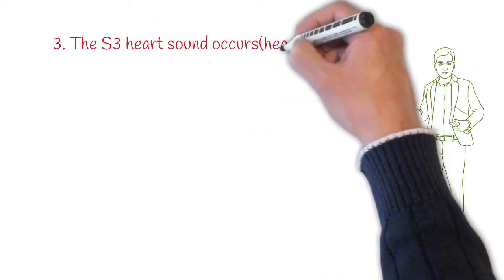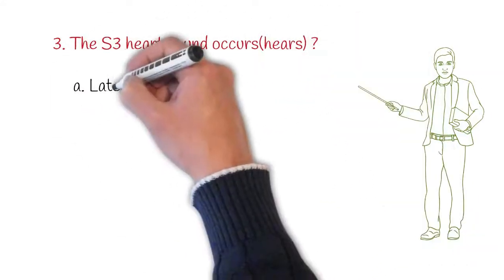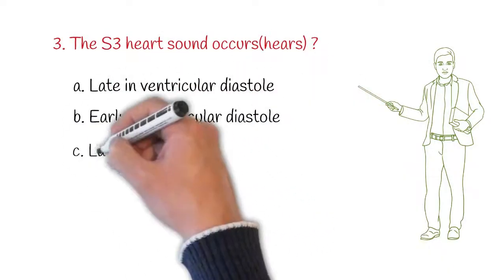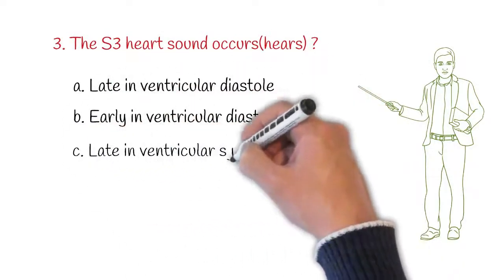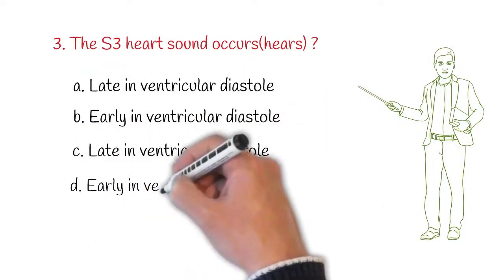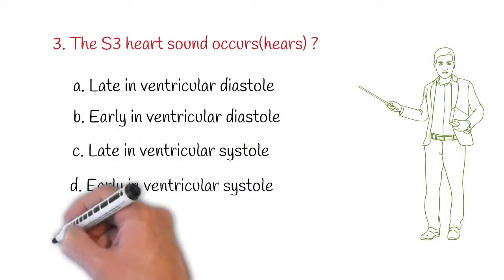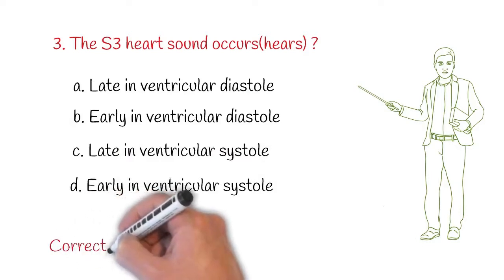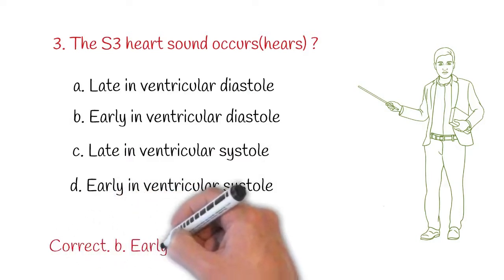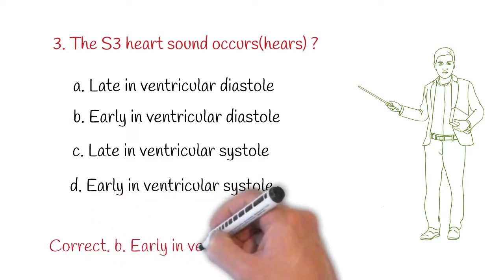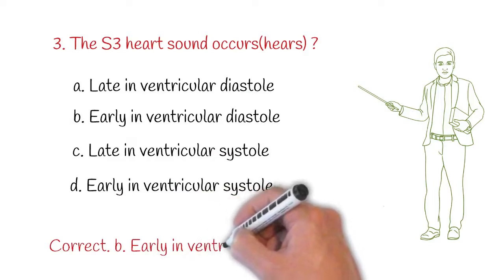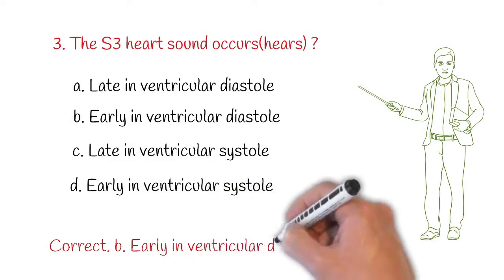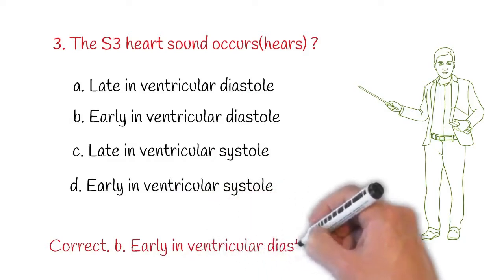Next question: the S3 heart sound occurs or is heard — option A: late in ventricular diastole, option B: early in ventricular diastole, option C: late in ventricular systole, option D: early in ventricular systole. Correct answer: B — early in ventricular diastole. The S3 heart sound occurs early in ventricular diastole.